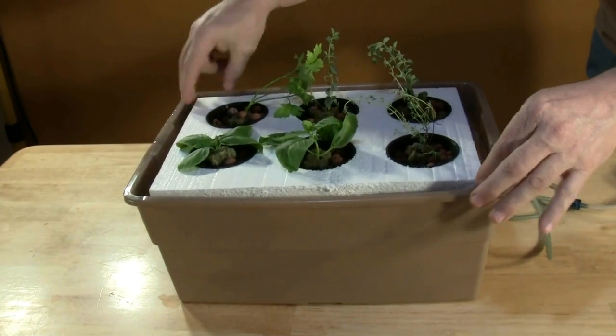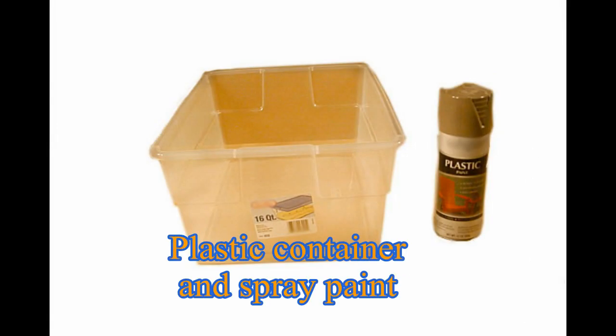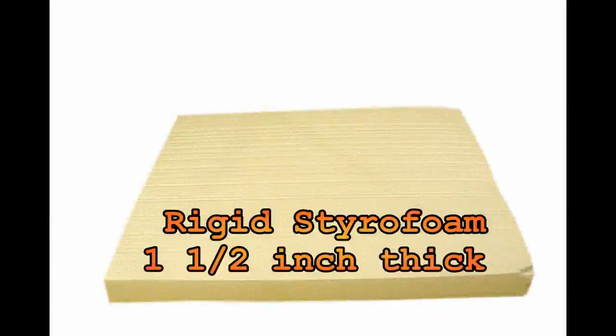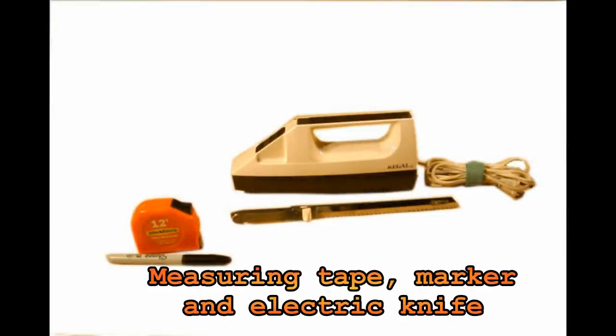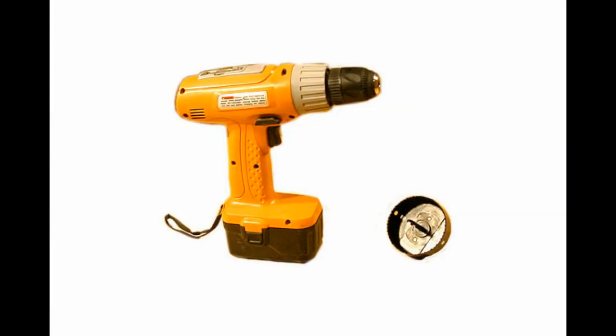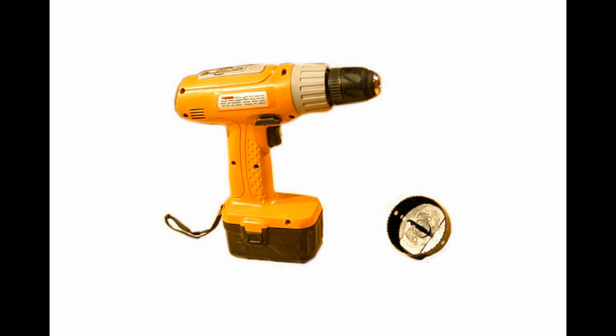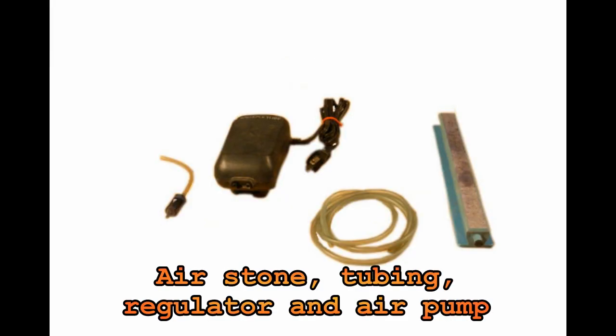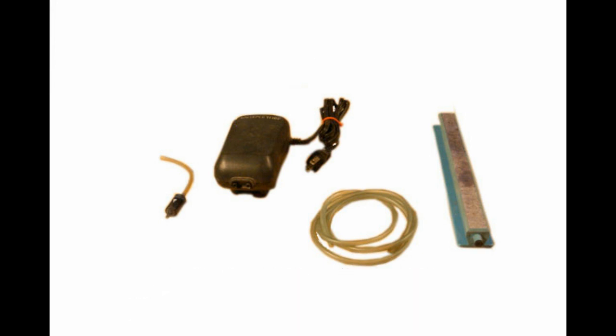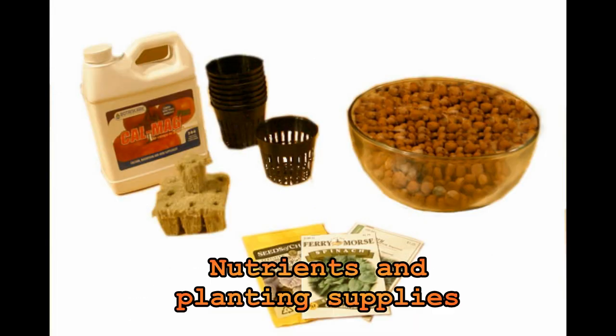For this project, you need a plastic container and a can of spray paint, a sheet of styrofoam, a measuring tape, marker, an electric knife or other cutting tool, an electric drill with a hole saw bit, an air stone, tubing, an air pump and a regulator, hydroponic nutrients, net pots, rock wool cubes, and clay pellets.